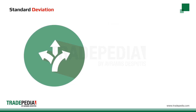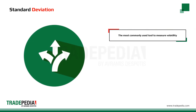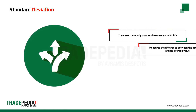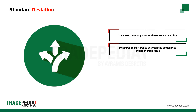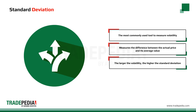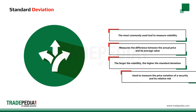The standard deviation is the most commonly used tool to measure volatility. It measures the difference between the actual price and its average value. The larger the volatility, the higher the standard deviation. Standard deviation is used to measure the price variation of a security and thus its relative risk.